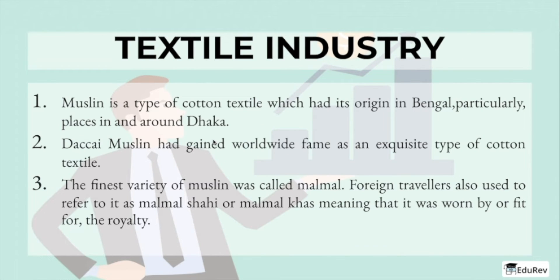Next comes the textile industry in Bengal. Muslin is a type of cotton textile which had its origin in Bengal, particularly in places in and around Dhaka, now the capital city of Bangladesh. The finest variety of muslin was called mal mal. Foreign travellers also used to refer to it as mal mal shahi or mal mal khas, meaning it was fit for royalty.